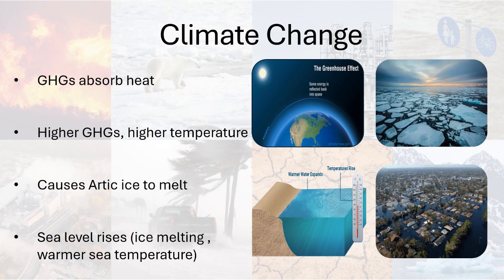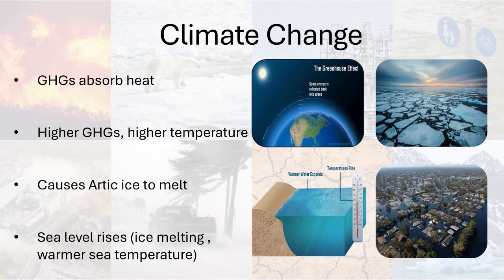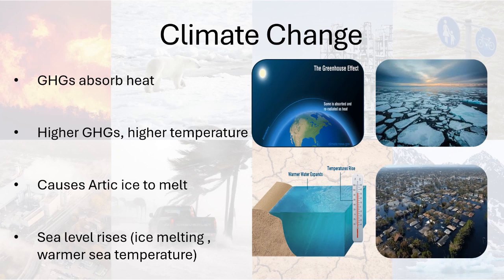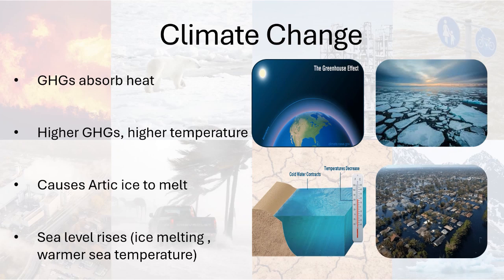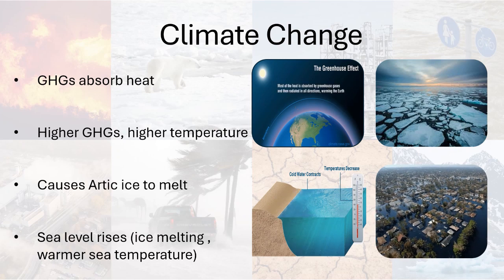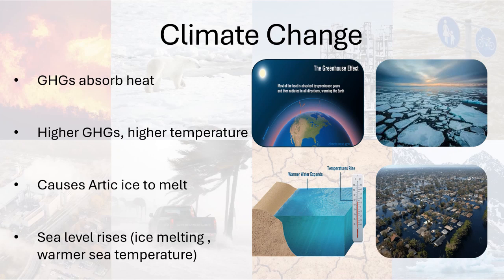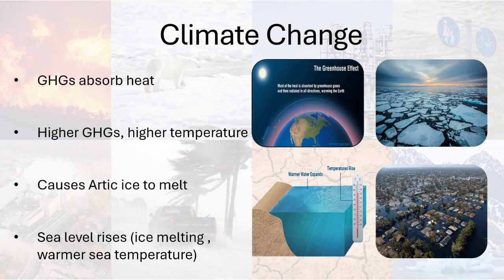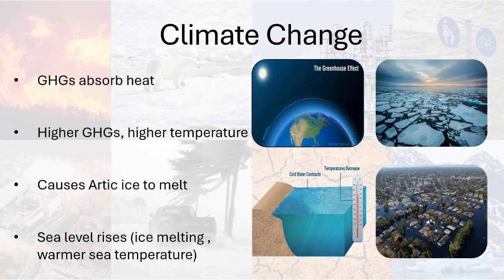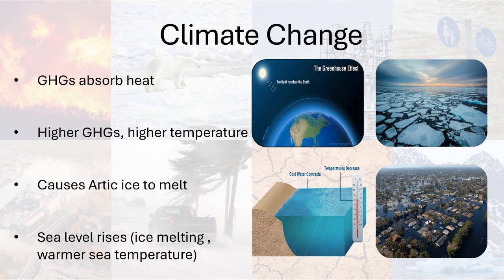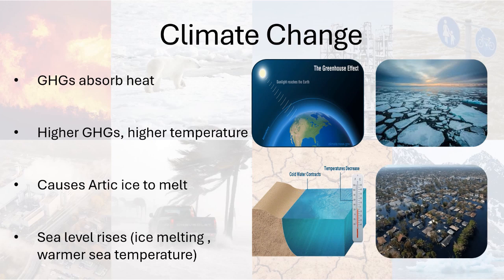This increase in temperature will melt the arctic ice, causing sea levels to rise. Warming of the seas also produces the same effect, as warm water expands. It is a serious threat to the coastal community because it will cause forced migration and permanent displacement. Low-lying islands will be swallowed completely by oceans.